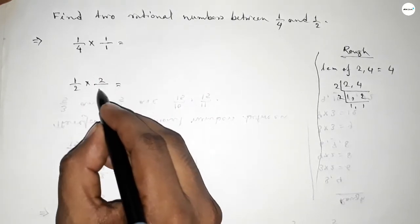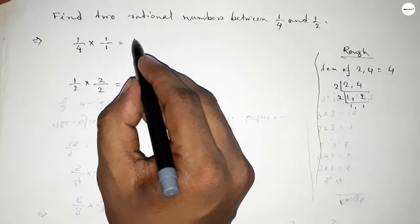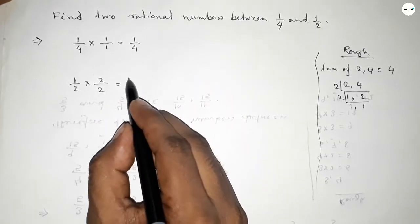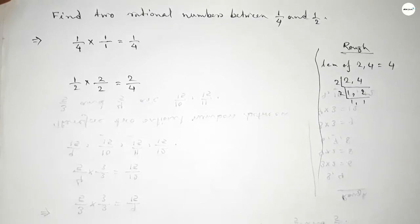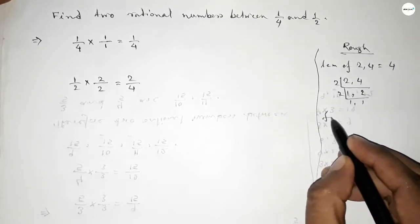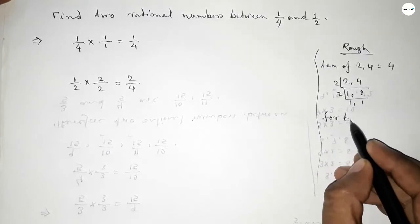Now what should we put here up and down to get both denominators 4? If you put here 1 and here 2, then we can get the denominator 4. So this is 1/4 and this is 2/4.